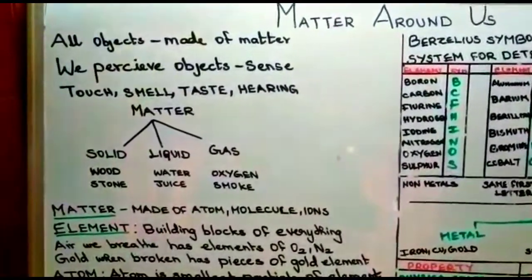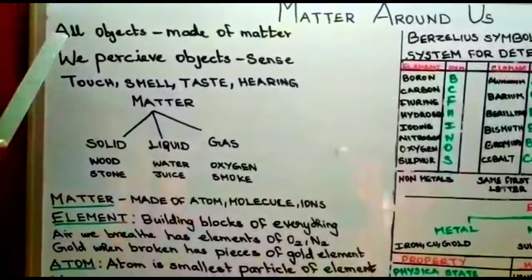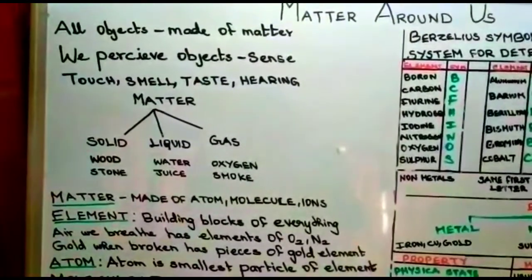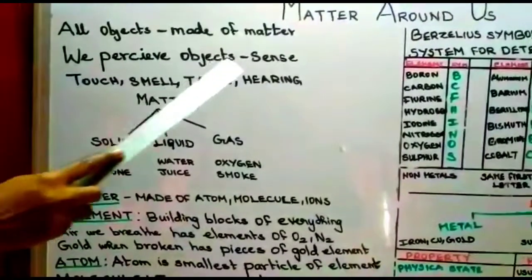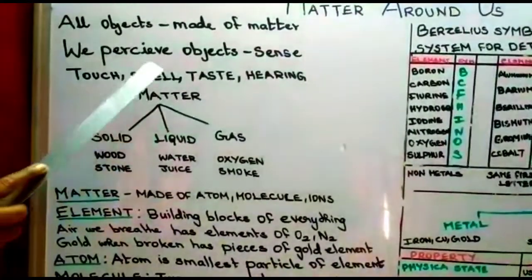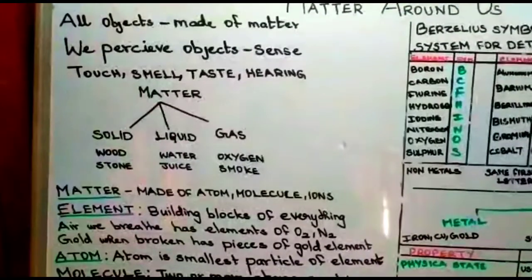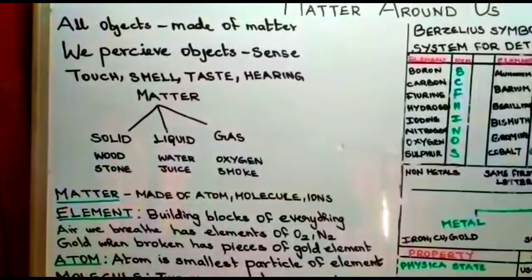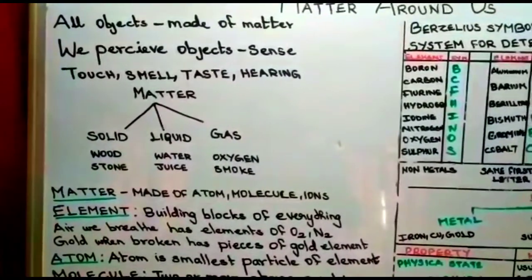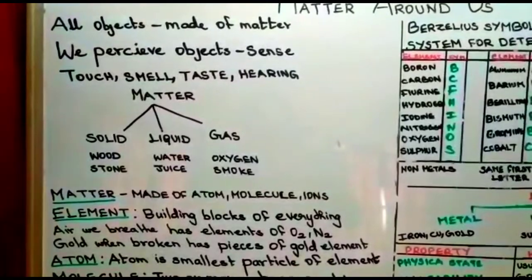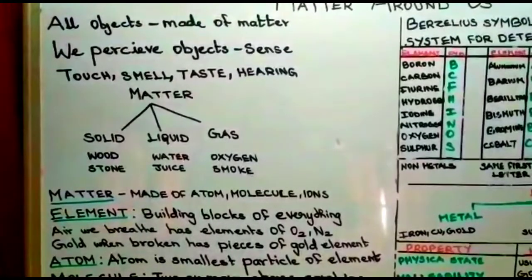All the objects in this universe are made up of matter. In this world, all objects are perceived by our five sense organs like sense, touch, smell, taste, and hearing. Matter has a definite mass and occupies space.